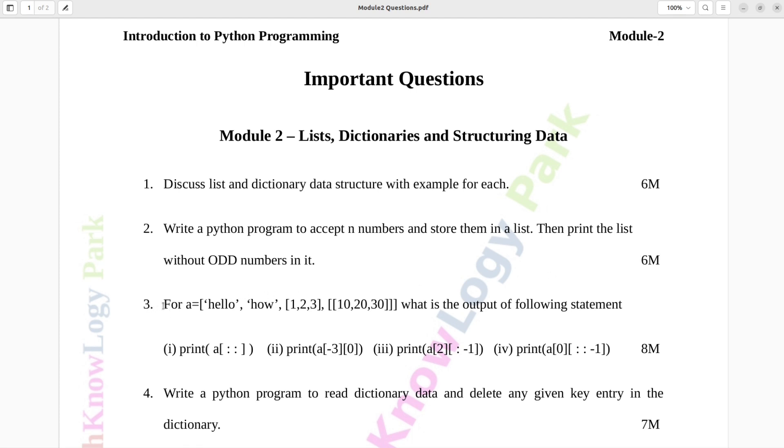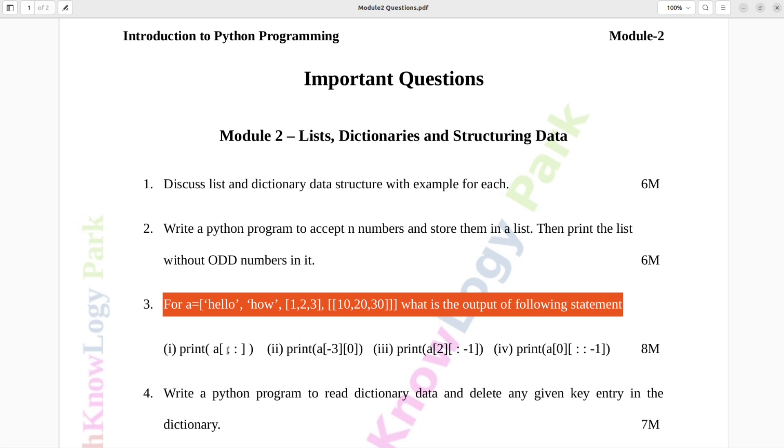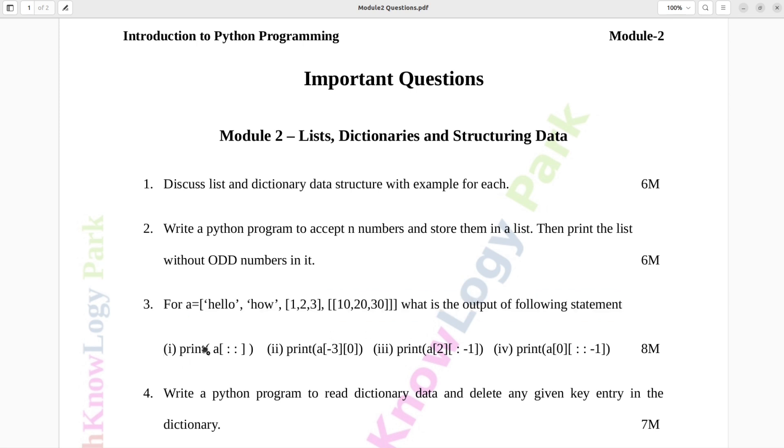Question number three. For a is equal to list of hello, how, list of 1, 2, 3, list of 10, 20, 30. What is the output of following statement? First, print a of colon colon. Second, print a of minus 3, 0.